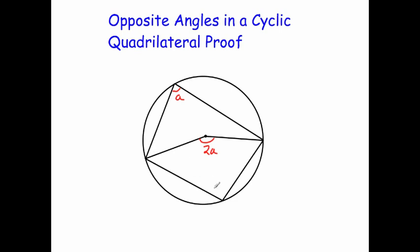Now likewise, here we've got another angle at the circumference, and here we've got another angle at the centre. So if this angle here is equal to B, this angle here will be twice that, so this will be 2B.